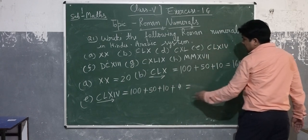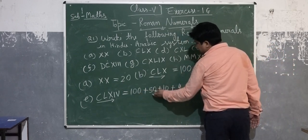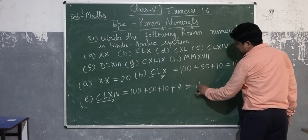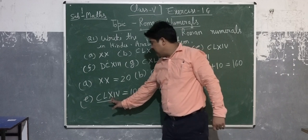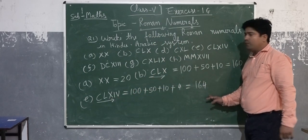What will be the answer? After adding 150, just take 160 plus 4. Value of CLXIV is 164.